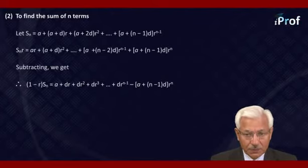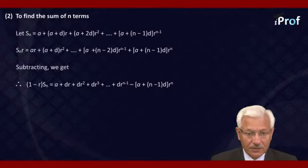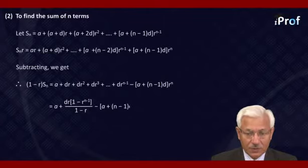From the second term to the last but one term, they form a geometric series with (n−1) terms, first term d·r and common ratio r. Therefore, (1 − r)·S_n equals a plus d·r times (1 − r^(n−1)) divided by (1 − r), minus (a + (n−1)d)·r^n.